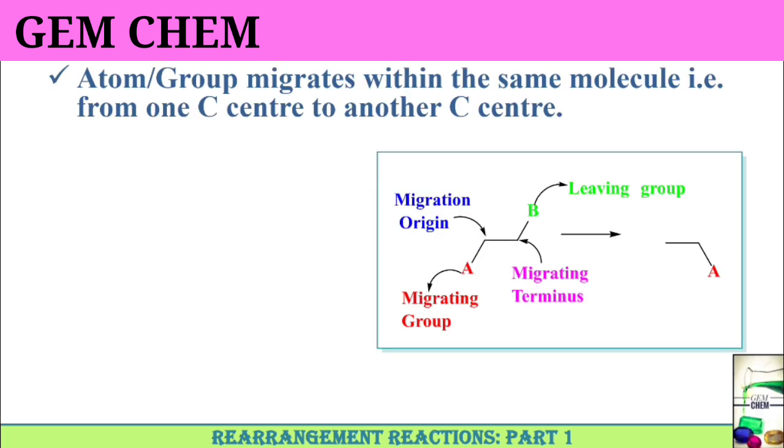Rearrangement basically means that an atom or a group of atoms will migrate within the same molecule. That is, it will travel from one carbon center to another carbon center. If you consider here, you have a migrating group A and a leaving group B. We can say that this is our migration origin and the other portion is our migrating terminus. Once A migrates to our migrating terminus, B will leave and form such a product.